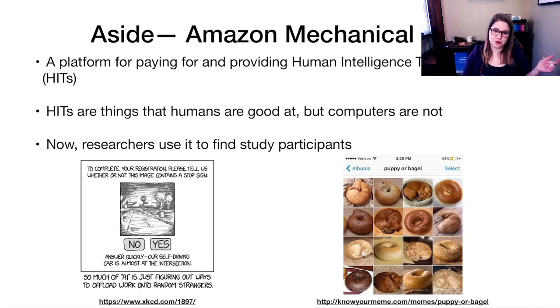These are just like a couple jokes, basically, that relate to these things that humans are good at, but computers are not. So this is a comic from XKCD. I think I've shown you some XKCD comics before. It says, to complete your registration, please tell us whether or not this image contains a stop sign. No or yes. Answer quickly. Our self-driving car is almost at the intersection. And then it says, so much of AI is just figuring out ways to offload work onto random strangers.